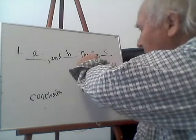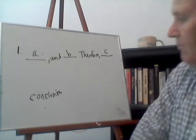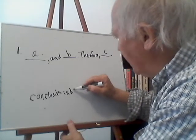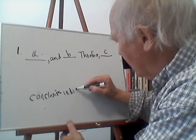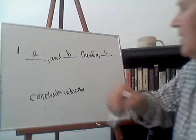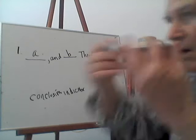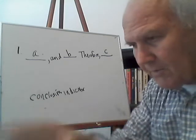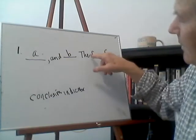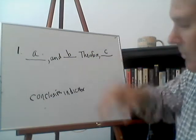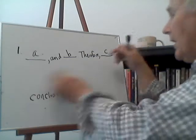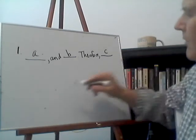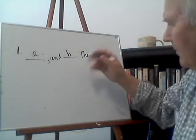Anything that comes after the word 'therefore' is going to be a conclusion. Therefore is a conclusion indicator. Another conclusion indicator would be the word 'thus,' or 'it follows that C.' These are very important words to be familiar with when you're trying to identify how an argument is working. If you can identify conclusion indicators, they will tell you what the conclusion is. So I'm going to diagram this argument now, because Chapter 2 also talks about diagramming. The conclusion of this argument would be C, so I'll put C at the bottom.